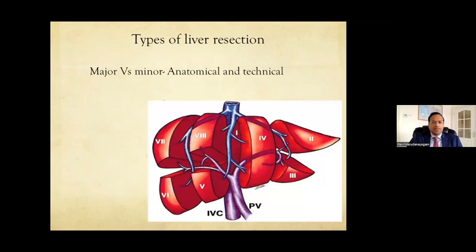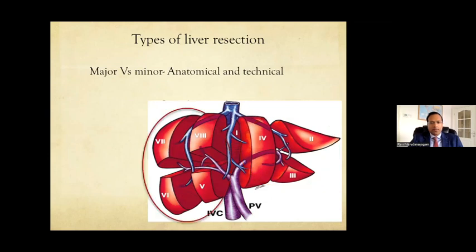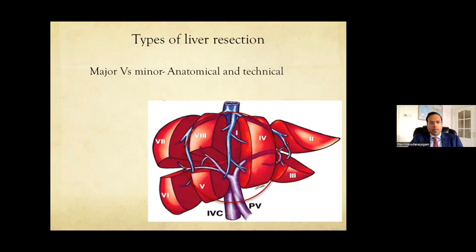Types of liver resection: anatomically, minor versus major — major is three or more segments. Left hepatectomy takes segments 2, 3, and 4; right hepatectomy takes 5, 6, 7, 8. Technically, a major resection is one that is challenging — like central hepatectomy (segments 4, 5, 8) or posterior sectionectomy (segments 6 and 7), which is technically major but anatomically only two segments. These definitions have evolved with laparoscopic approaches, where majors are classified based on technical difficulty.